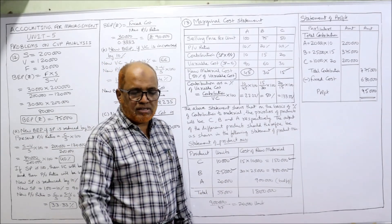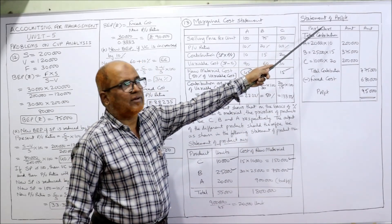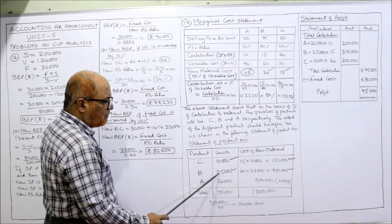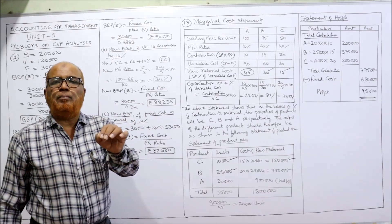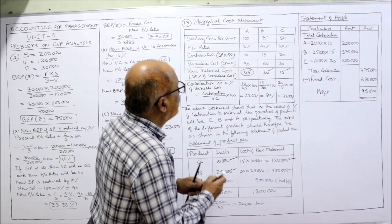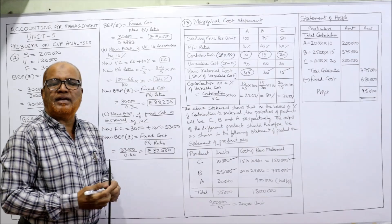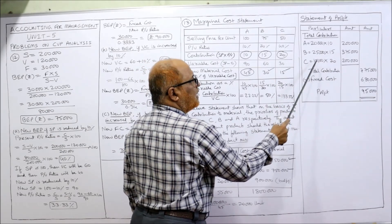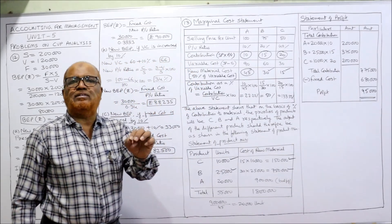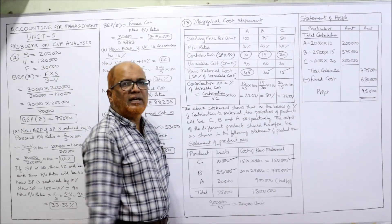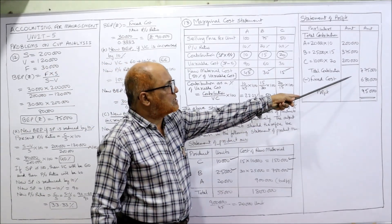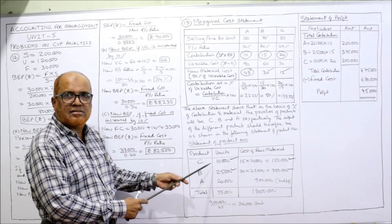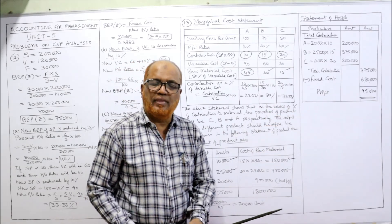Statement of maximum profit: Contribution per unit — A = 10, B = 15, C = 20. Total contribution: A: 20,000 × 10 = 2,00,000; B: 25,000 × 15 = 3,75,000; C: 10,000 × 20 = 2,00,000. Total contribution = 7,75,000. Deduct fixed cost of 6,80,000. Maximum profit = 7,75,000 − 6,80,000 = 95,000. This product mix gives the maximum profit of 95,000.